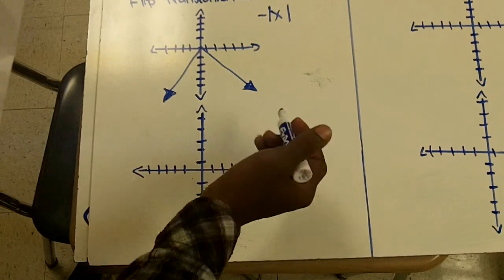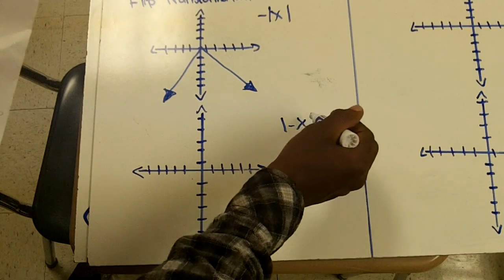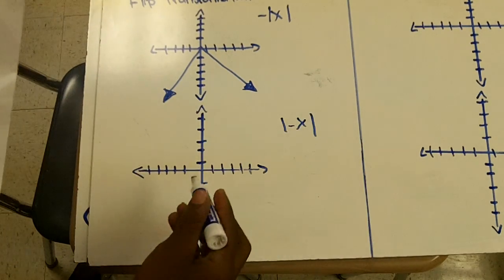Then when you put the negative on the inside beside the X, your graph looks like this.